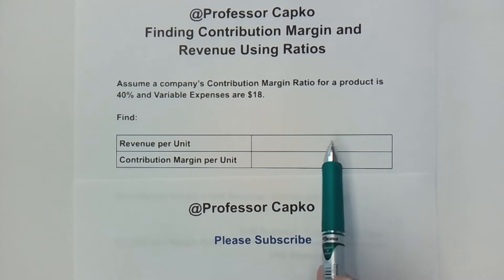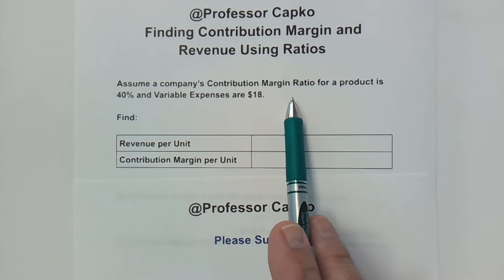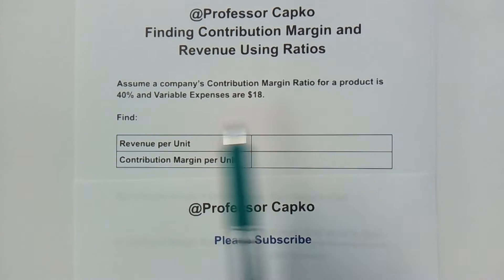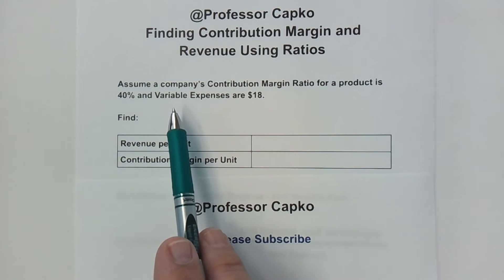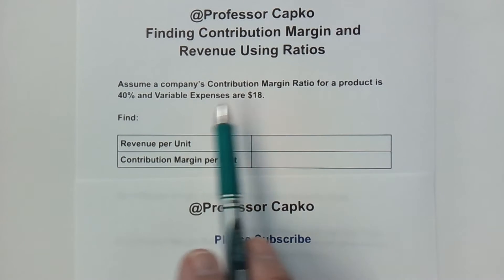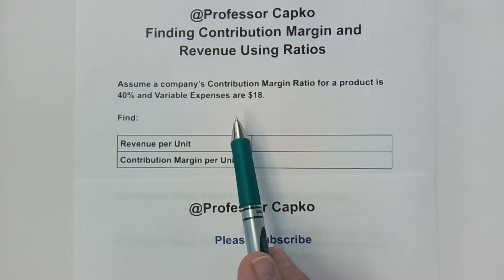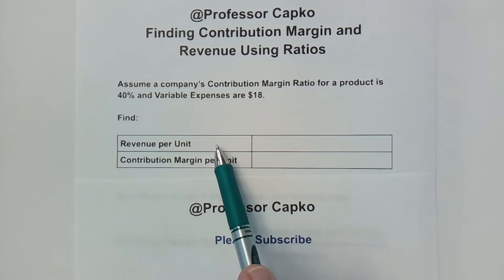In this problem, we are told that a company's contribution margin ratio for a particular product is 40%, and that variable expenses are $18 per unit. We need to find the revenue per unit and the contribution margin per unit.